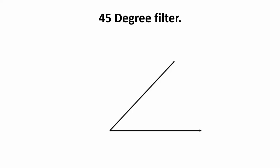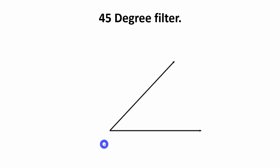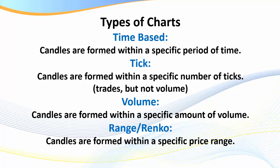On trend lines: when you've got what I call a 45-degree filter — a nice solid trend line — be very cautious of counter-trend trading. The steeper the trend line, the more cautious you need to be when it comes to counter-trend trading.